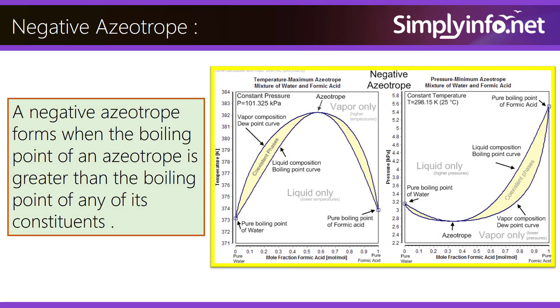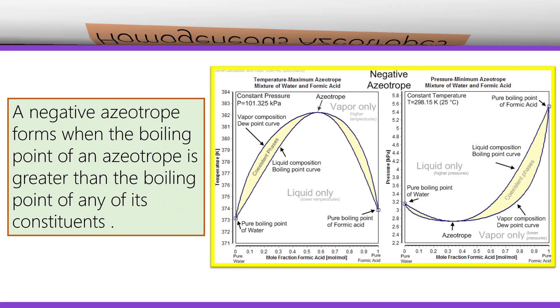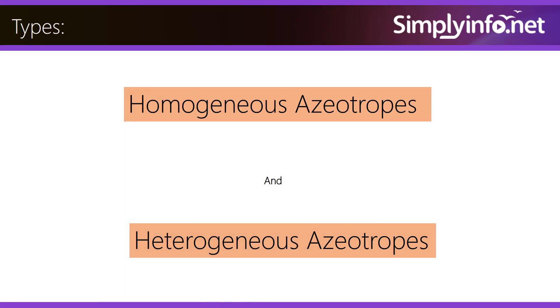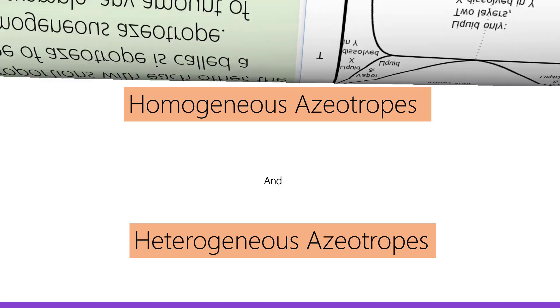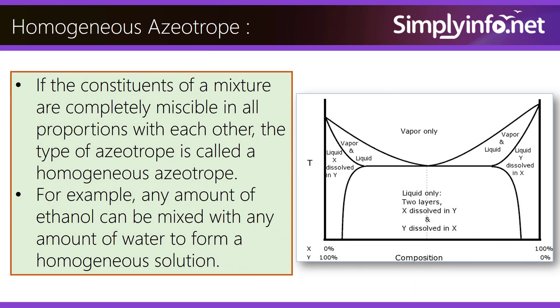A negative azeotrope forms when the boiling point of the mixture is greater than the boiling point of any of its constituents. Azeotropes can also be classified as homogeneous or heterogeneous. Homogeneous azeotropes occur when the constituents are completely miscible in